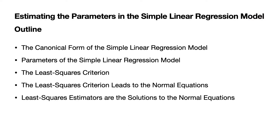Here's an outline of what we'll be looking at in this lecture. We'll remind ourselves of the canonical form of the simple linear regression model. We'll also identify the parameters of the simple linear regression model, and in particular the beta parameters. We'll specify the least squares criterion and show that it leads to the normal equations. We'll then see that the least squares estimators are the solutions to the normal equations.